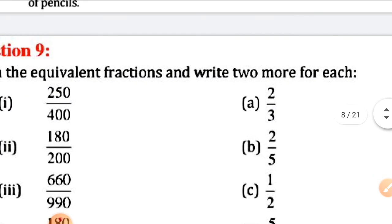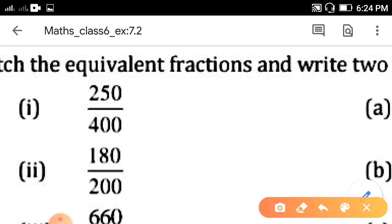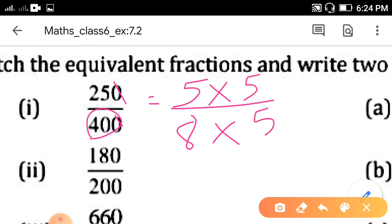So, first one, 250 upon 400. First of all, you have to simplify it. Make it in a reduced form. Zero, zero, we can cut. Now, 25. Instead of 25, you can write 5 into 5. And 40, 8 times 5 is 40. So, 8 times 5 is 40, and 5 times 5 is 25. Now, 5, 5, cut. So, here it remains 5 upon 8.